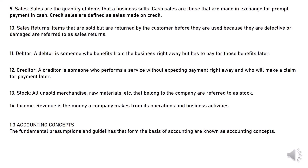11. Debtor: A debtor is someone who benefits from the business right away but has to pay for those benefits later. 12. Creditor: A creditor is someone who performs a service without expecting payment right away and who will make a claim for payment later. 13. Stock: All unsold merchandise, raw materials, etc. that belong to the company are referred to as stock.